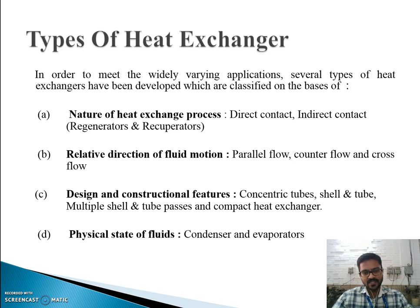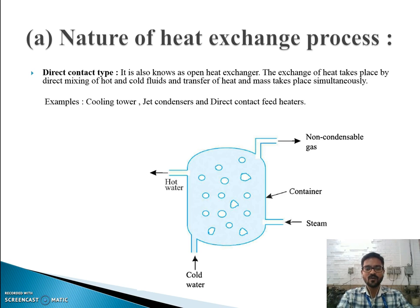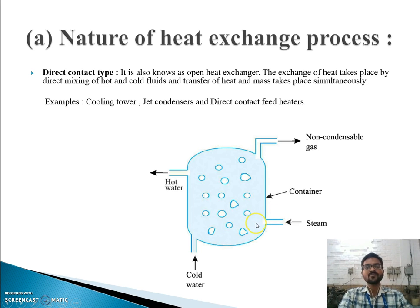Now I will explain each classification in detail. The first is the nature of the heat exchange process, classified into direct contact type and indirect contact type. In direct contact type, as seen in the figure, cold water enters from one side and steam from the other. They mix directly, so heat flows from the hot steam to the cold fluid. The best example of this type is cooling towers found in power plants.